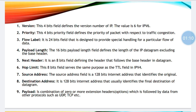Flow label has 24 bits allocated. Why is flow label required? Flow label is required so we can send the packet at a particular flow so that the receiver is able to receive it.